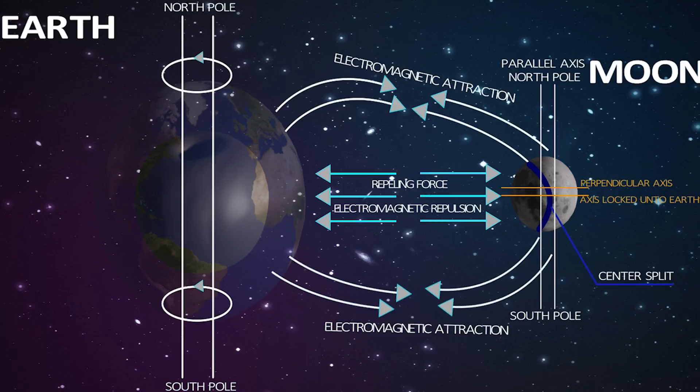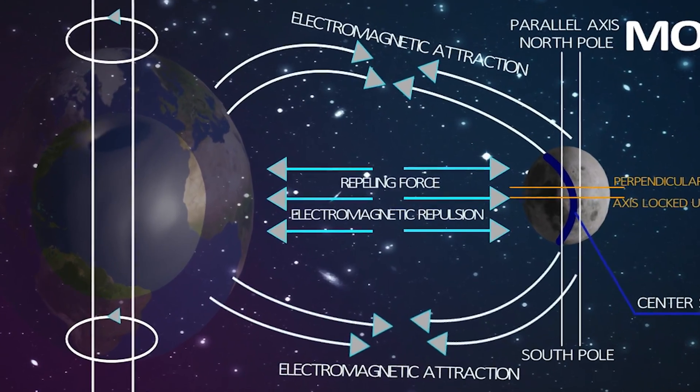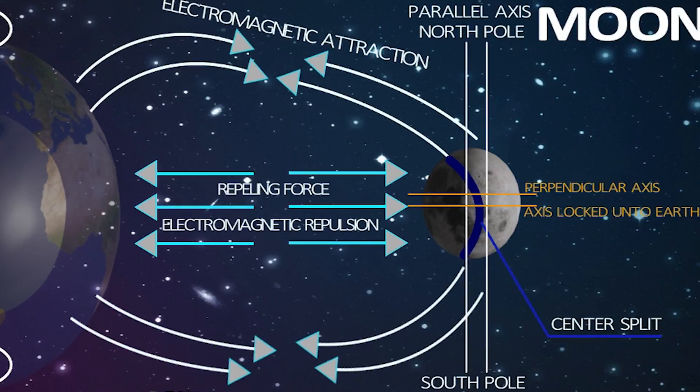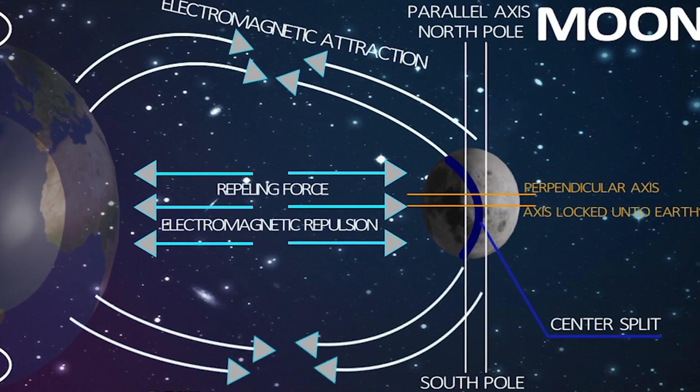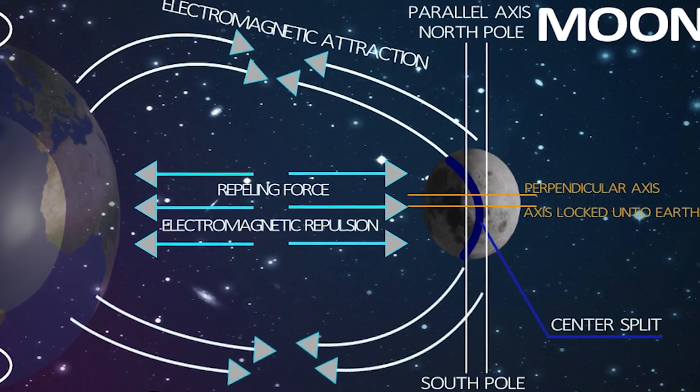Earth's moon has two axes. A north-south vertical pole axis, in parallel to Earth's magnetic poles, locked onto Earth's north and south polarities.